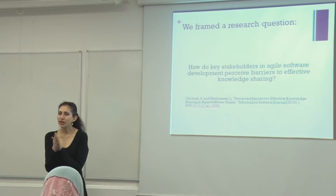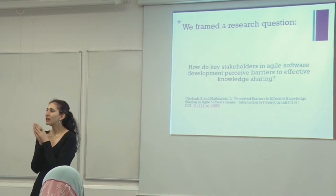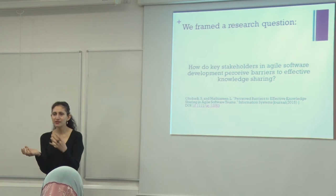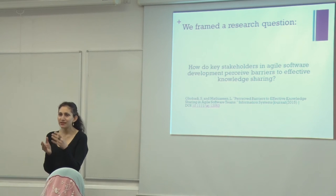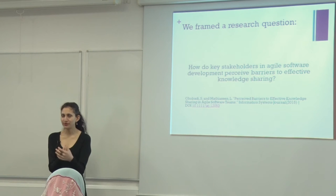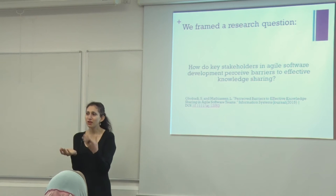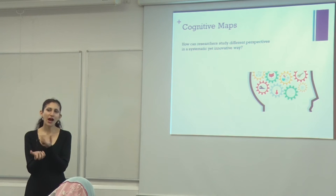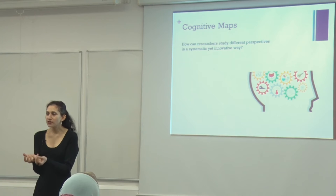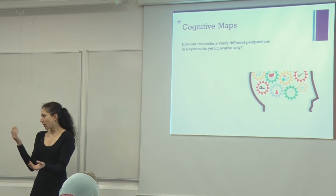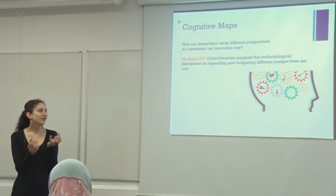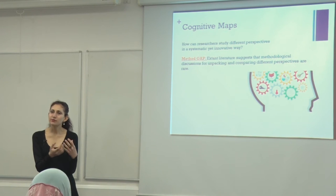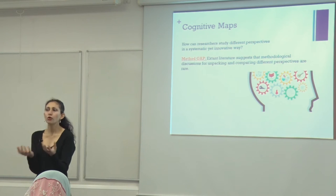I started this project with my colleague Lars Mathiasen in Atlanta, and we framed the research question. As a first step, I looked at the literature to see if there were studies on similarities and differences between stakeholders — and found no prior work. The second step was examining how existing researchers study different perspectives. We found a method gap: there were no systematic methods for exploring these differences or similarities.